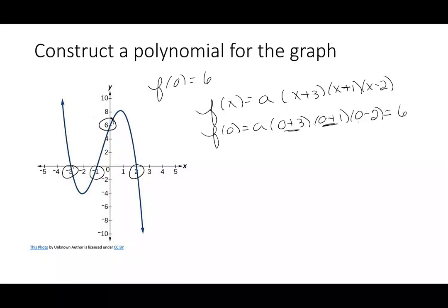So 3 times 1 times negative 2, that says negative 6a is 6. a here is negative 1. The negative 1 does what we want it to. It makes it fall to the right.